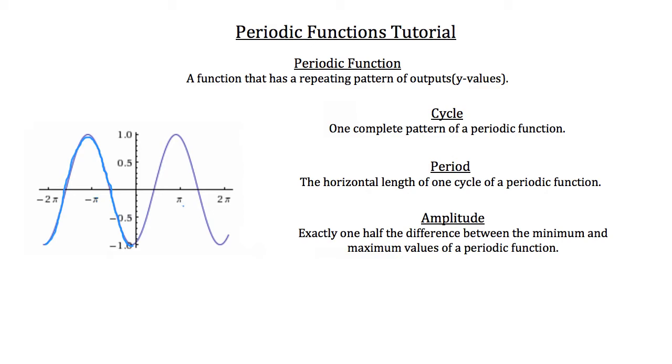And the period for this periodic function is this horizontal length from here to here, in which that cycle completes. So you can see, according to this graph, that each period of each of these cycles has a value of 2π. That's equal to our period. And that's indicated on the x-axis of our graph here.